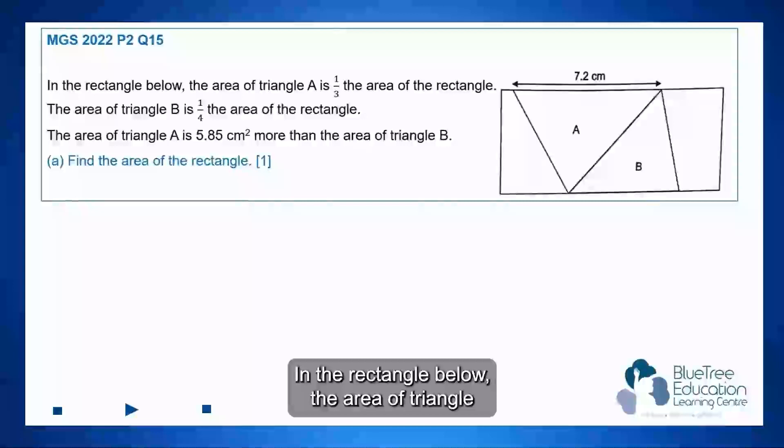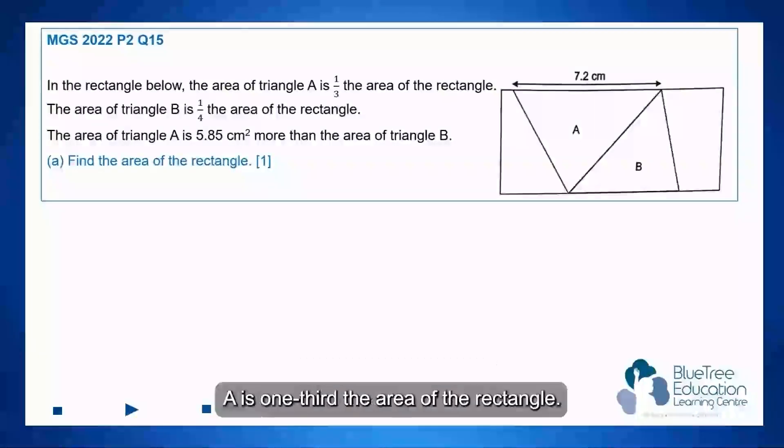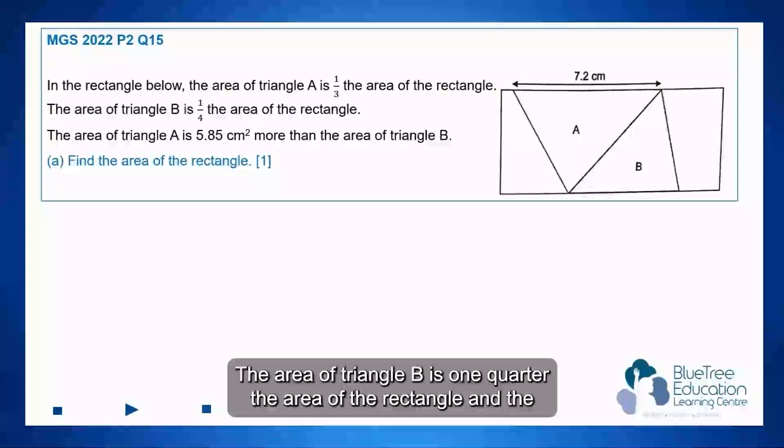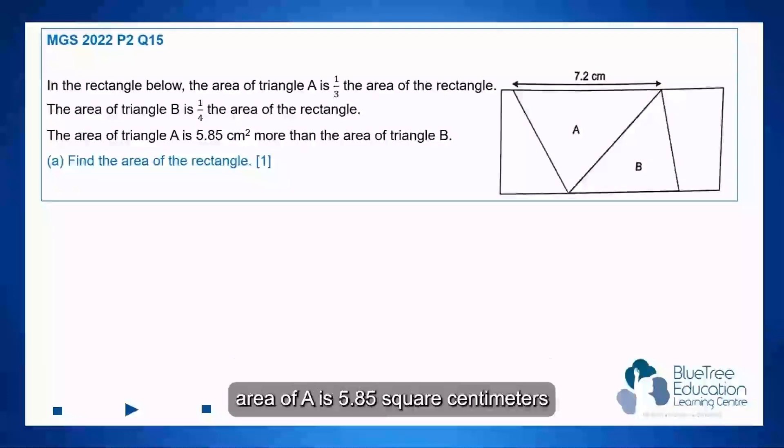In the rectangle below, the area of triangle A is one-third the area of the rectangle, the area of triangle B is one-quarter the area of the rectangle, and the area of A is 5.85 square centimeters more than the area of triangle B. As you can see, there are some repeated names of rectangle being mentioned,